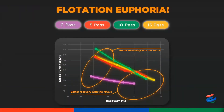Here we see vastly improved grade recovery curves with the MACH compared to the base case, with the MACH providing both higher grade and recovery. This is attributable to the improved flotation of better liberated, higher grade fines with the MACH reactor. This is useful in both roughing and cleaning circuits — and while I say it quite casually, it's actually quite a phenomenal achievement.